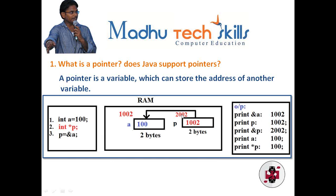So now `p` contains the address of `a`, that is 1002. This block also has a separate address called 2002 — for `p` also we have allocated memory in RAM and it has some address, 2002. So what I have done is I declared a normal variable and stored the address of that variable in a pointer variable `p`. Whenever I print `&a` — the address of `a` — the output will be 1002. Whenever I print `p`, since `p` contains 1002, the output will be 1002. Whenever I print `&p`, that is the address of `p`, the output will be 2002.